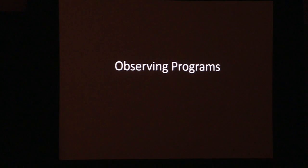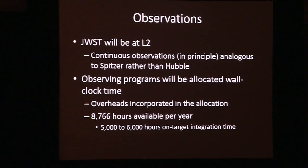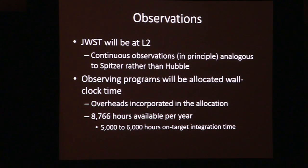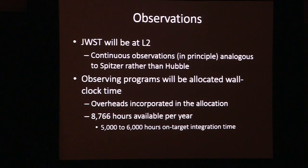What kind of observing programs will we have? JWST will be at L2, and unlike Hubble where we schedule in orbits, we're doing this in hours — all observing programs in JWST will be scheduled in wall clock time. Overheads are incorporated into that allocation. There are 8,760 hours per year, which turns into something like 5,000 to 6,000 hours of on-target integration time — quite a lot.